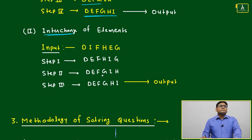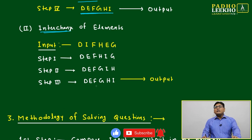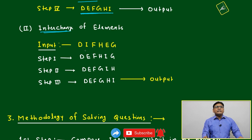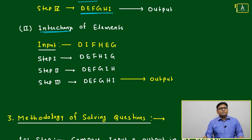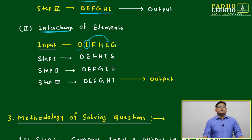But in interchange, two elements will interchange their respective positions. Input is the same: D I F H E G. Now here D is perfectly fine, no need to touch. Next we need E. In place of I, the next alphabet must come E. What we will do? We'll just interchange I and E.